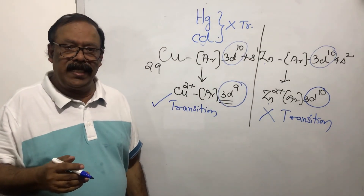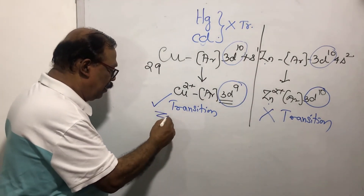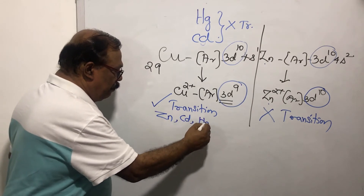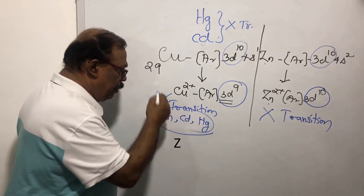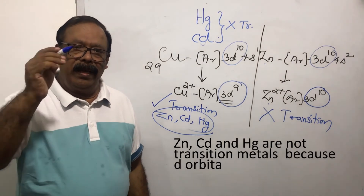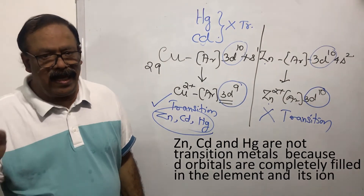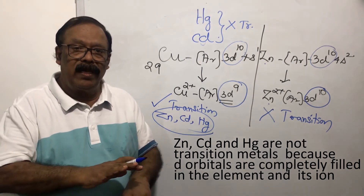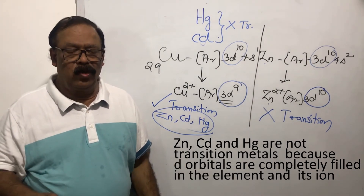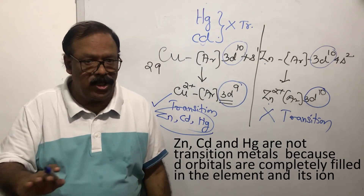In the d-block, there are three elements that are not transition elements: zinc, cadmium, and mercury. Because in their elemental state as well as in their ions, the d-orbitals are completely filled. So by definition, they are not transition elements.